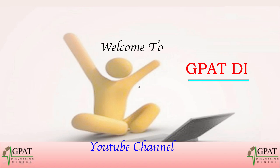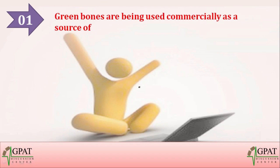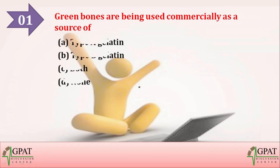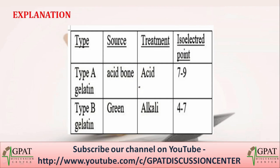First question: Green bones are being used commercially as a source of — options are: option A type A gelatin, option B type B gelatin, option C both, or option D none. The correct answer is type B gelatin.